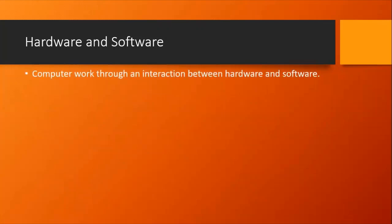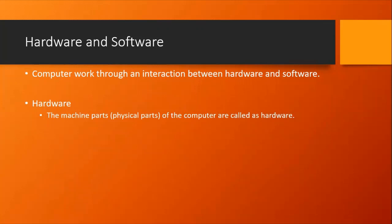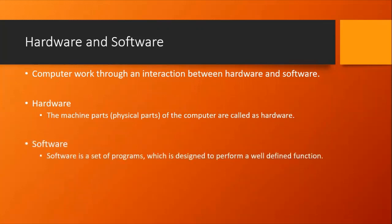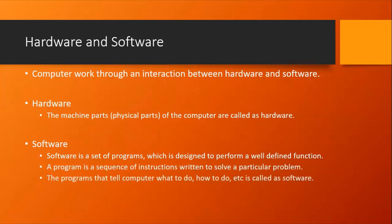The next concepts are hardware and software. A computer always has two things: hardware and software. Hardware basically means anything which is machinery parts or physical parts of the computer. Software is nothing but a set of programs or instructions what we provide to the computer in order to perform certain tasks. In general terms, software is the programs that tell the computer what to do and how to do it.